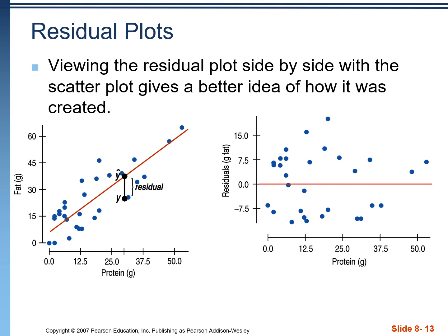You should also be able to read the scatter plot and residual plot in tandem with one another. For example, if it asks you to find the residual for a specific point — say one approaching 25 on the x-axis — you should be able to pick that out of the residual plot, which looks to be about 20. Exam questions will give you both graphs and ask things like: what is the x-value of the point with the smallest residual? You find it in the scatter plot, then locate it in the residual plot — it's about six or seven.